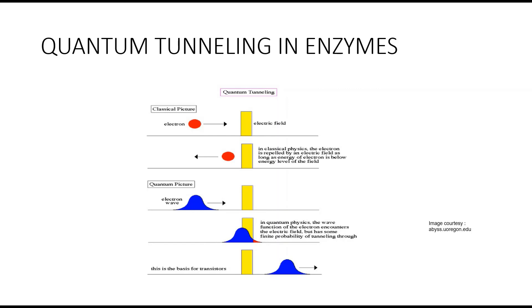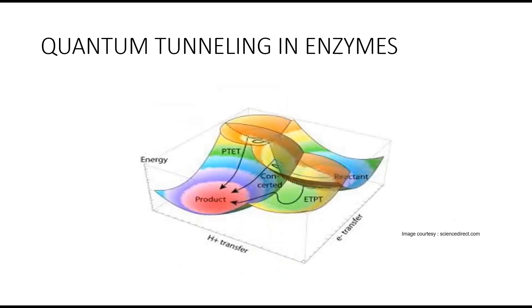Quantum tunneling occurs when light atoms such as hydrogen are involved. These studies will eventually help to understand the mechanism of tunneling in enzymes and find out if certain enzymes incorporate subtle nuclear quantum effects into their catalytic cycle.